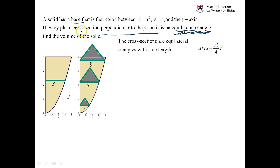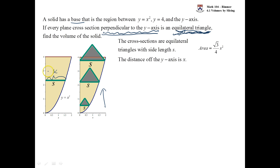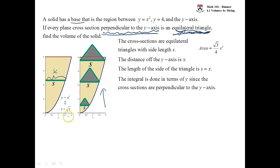When you have cross-sections that are perpendicular to the y-axis, you should be integrating with respect to y. We increase y, which will in turn increase the area of these equilateral triangles, so we have to integrate with respect to y. This distance off the y-axis is called x, so this formula needs to be solved for x. Well, y is x squared, so x is the square root of y. Although this distance is called x, we can't represent it in terms of x because we're integrating in terms of y, so we replace it with the square root of y. That is the side length: the square root of y.